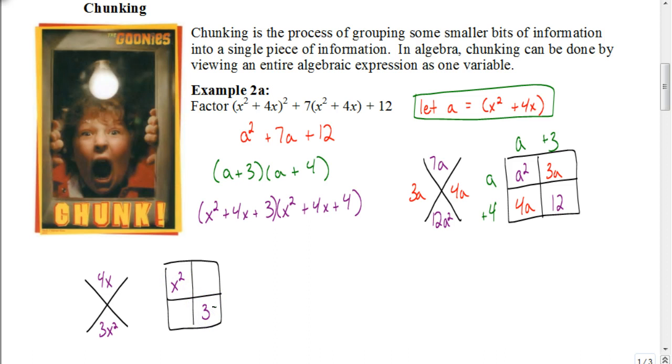So again we're trying to figure out what two numbers multiply to be 3x², same two add together to be 4x. Well that's pretty easy, it's just 1x and 3x.